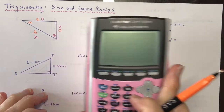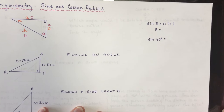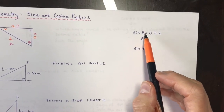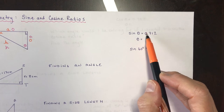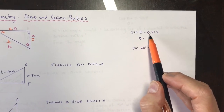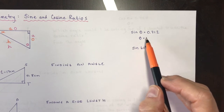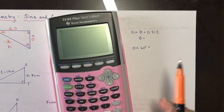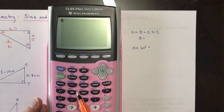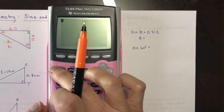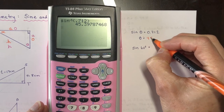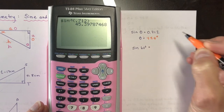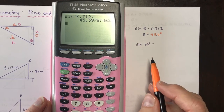The first thing you need to know is how to find the angle when you've been given a ratio. If the sine of theta equals 0.712, that means the opposite to hypotenuse ratio is 0.712. To find the angle, use the inverse sine: press second, then sin⁻¹, and plug in 0.712 — that gives approximately 45.4 degrees. Make sure you include the degree symbol and round to the appropriate number of decimals.